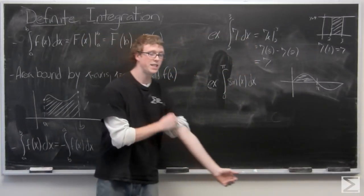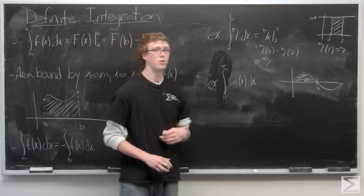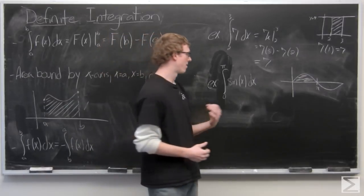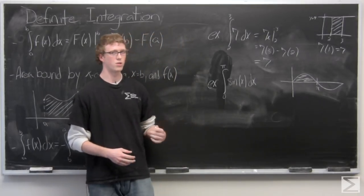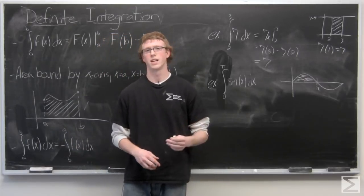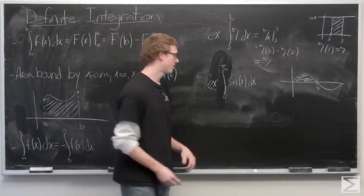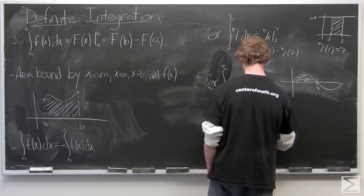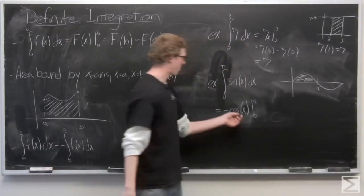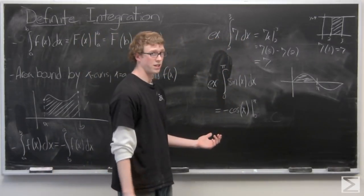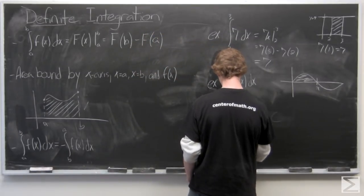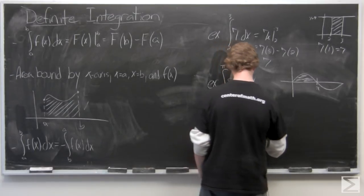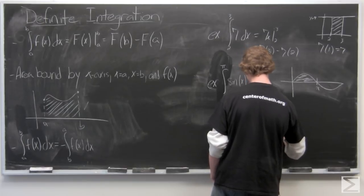So we're going to take the antiderivative of sine of x. Well, we know that the derivative of cosine of x is negative sine of x. So the antiderivative of sine of x must be negative cosine of x because then when you take the derivative, you have negative times negative sine of x, which yields positive sine of x. And we're going to get negative cosine of x from 0 to pi, and we're just going to need to plug those in.